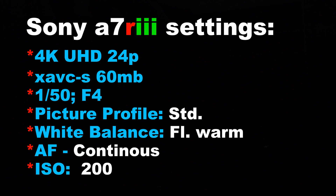Okay, we're now doing 4K on the Sony a7R III. It's set at XAVC codec, 4K, 24 frames per second, 60 megabits, shutter speed 1/50th, ISO 200, standard picture profile. So here we go at ISO 200.